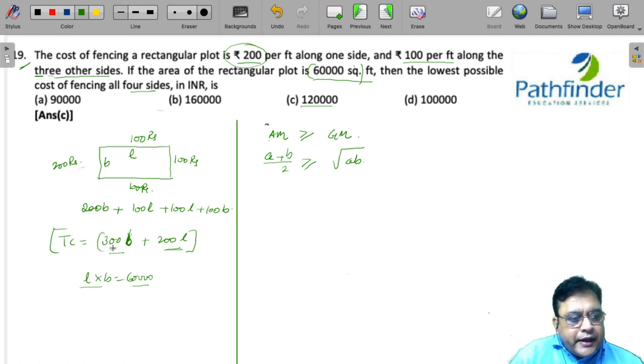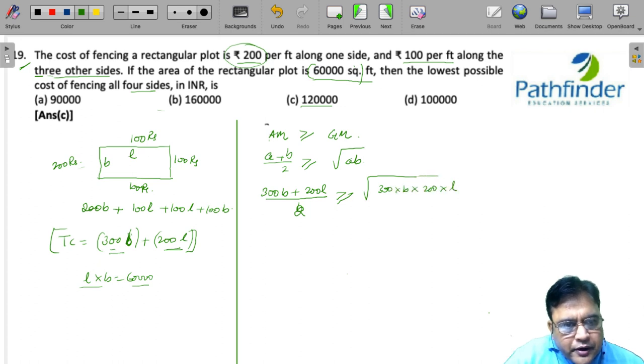Here A and B is 300B plus 200L because we want to find out the sum, the minimum sum possible. So, we have 300 times B plus 200 times L divided by 2 must be greater than equal to under root of 300 into B into 200 into L.